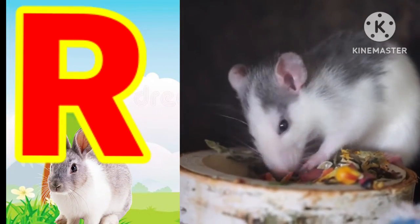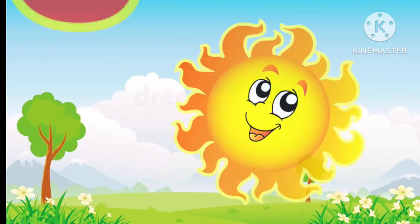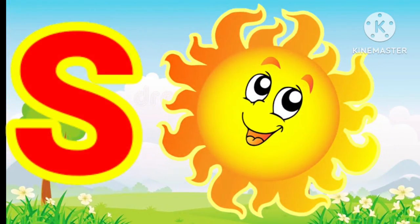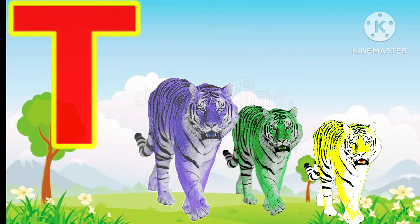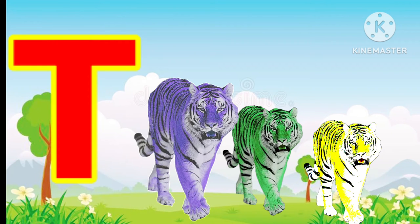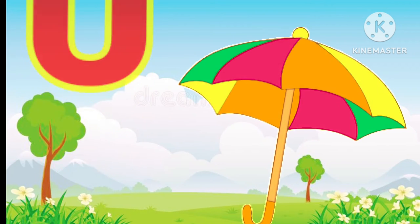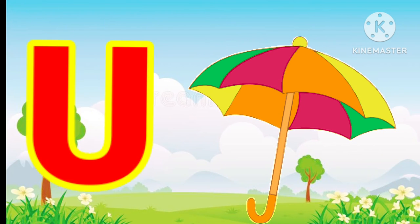R for rat, S for sun, T for tiger, U for umbrella.